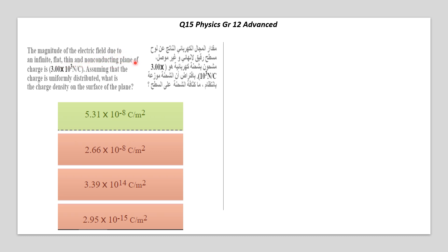The magnitude of the electric field due to an infinite, flat, thin, and non-conducting plane of charges is 3 × 10³ newton per coulomb. Assuming that the charge is uniformly distributed, what is the charge density on the surface of the plane?